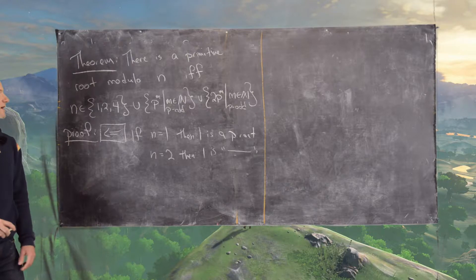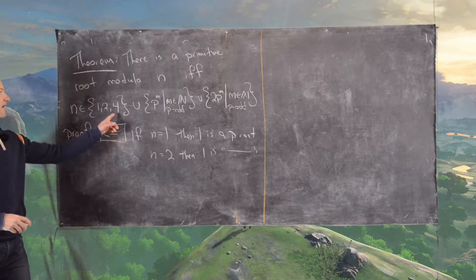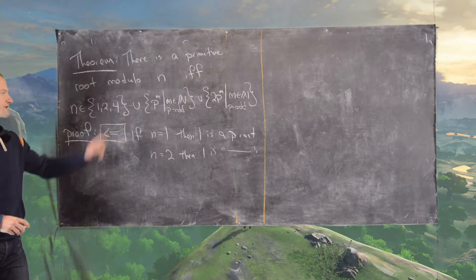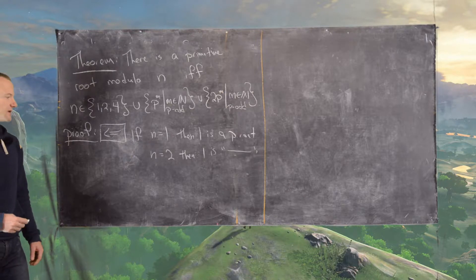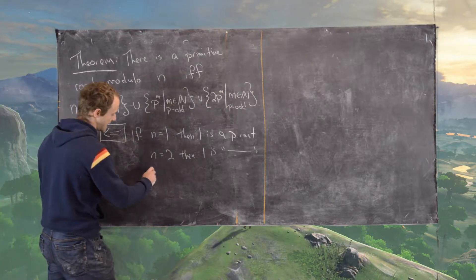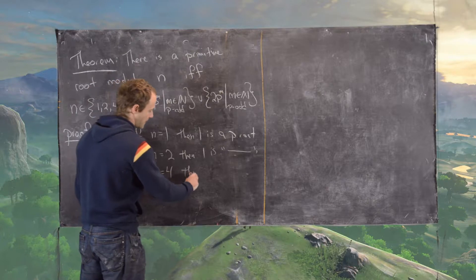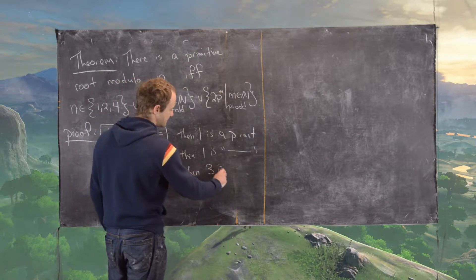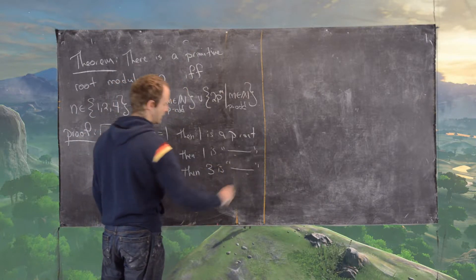And then 4 is the strange one where if we have 4 as a power of 2, but it's the only power of 2 that has a primitive root. And so if n equals 4, then 3 is a primitive root.